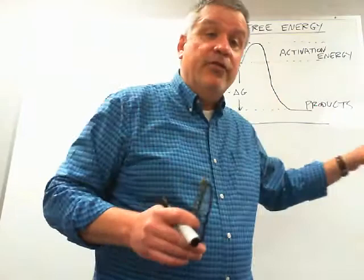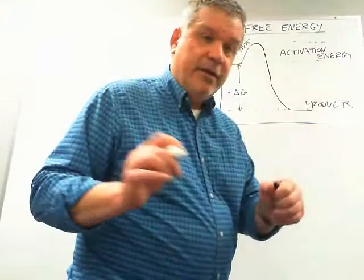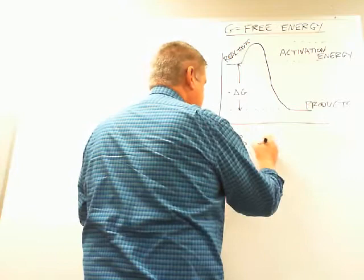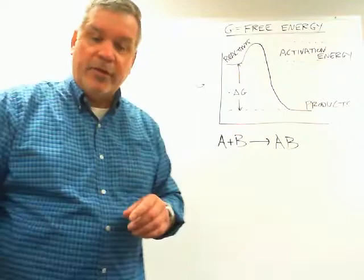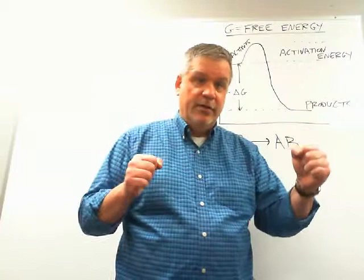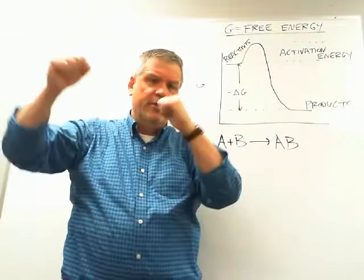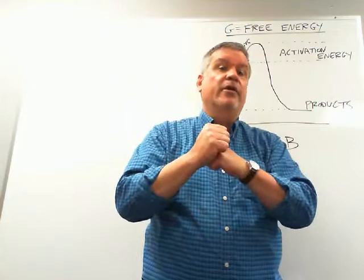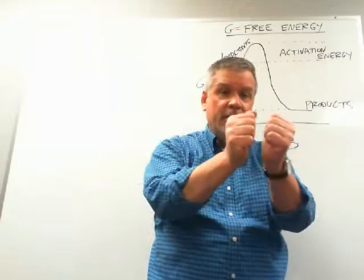Enzymes catalyze or speed up these reactions by lowering this activation energy. Let's consider a very simple generic reaction: reactants A and B react together to give us the product AB. Say we have a beaker of water and we put A and B in that beaker. My left hand is reactant A, my right hand is reactant B — they're floating around in solution. In order for a reaction to happen, first they have to encounter each other. Second, they have to encounter each other oriented in the right way in space. Third, they have to encounter each other with enough kinetic energy for a reaction to take place.